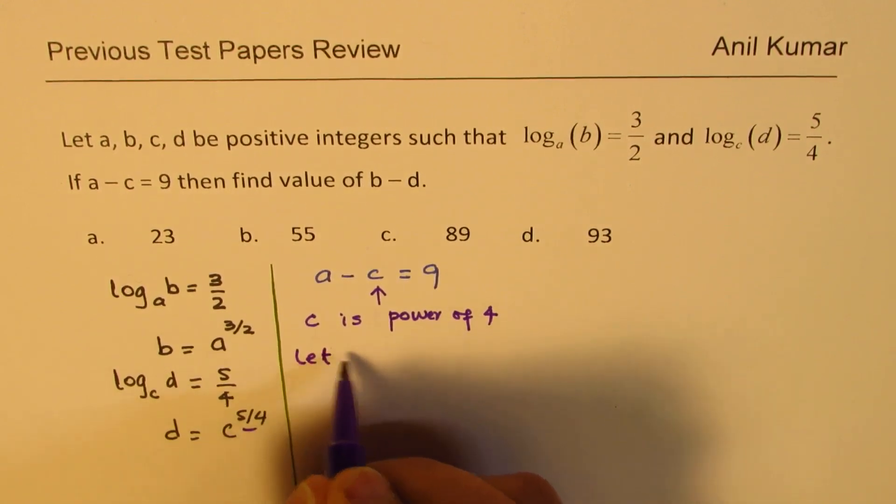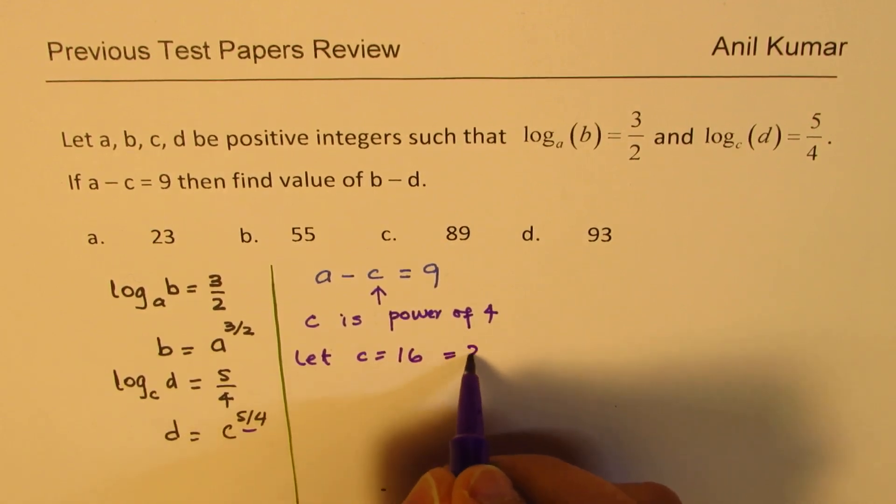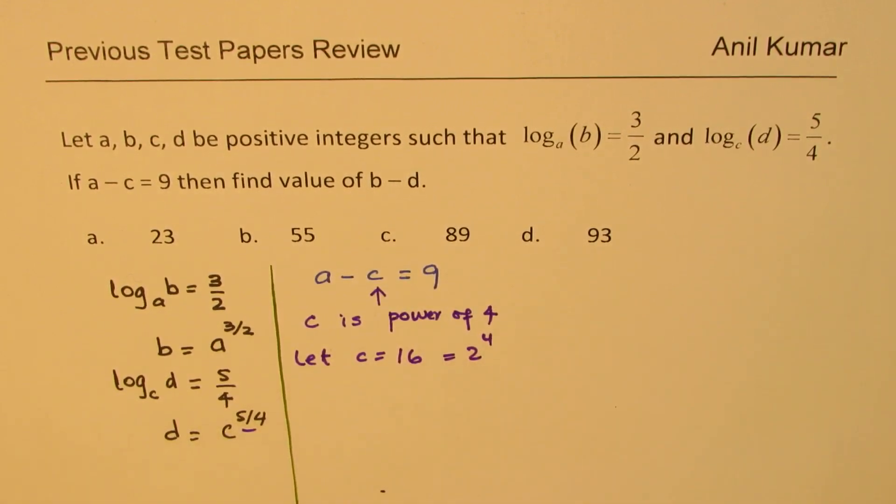Since we have D as C to the power of 5 over 4, so let C equals 16. Since we know 16 is 2 to the power of 4 and that is the reason why I am assuming C to be 16. So when you have multiple choice questions you have to work with some numbers to get to the result.